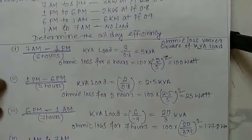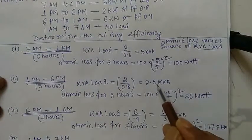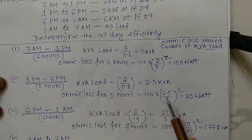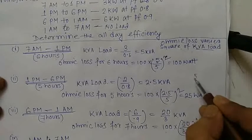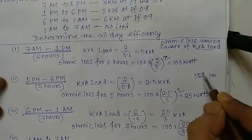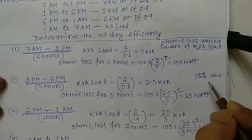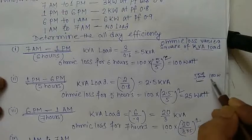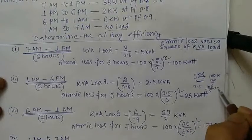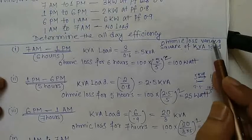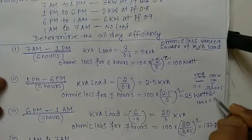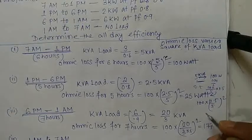For example, in the second case the kVA load is 2.5 kVA. Since for 5 kVA the ohmic loss is 100 watts, for 1 kVA it is 100/5, and for 2.5 kVA it is 100/5 × 2.5. Because it varies as the square of kVA, we write 100 × (2.5/5)² = 25 watts. Remember that concept.